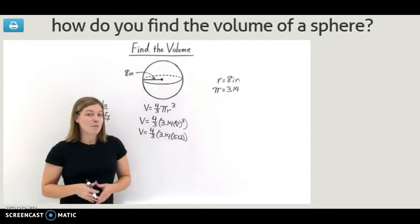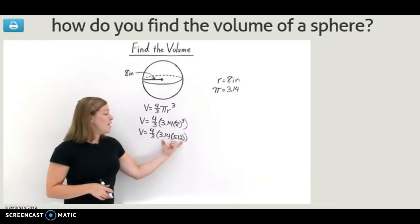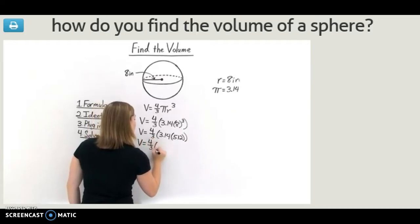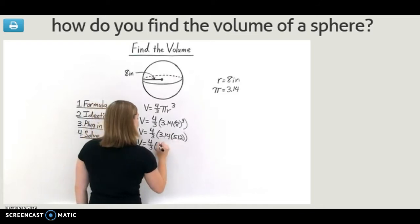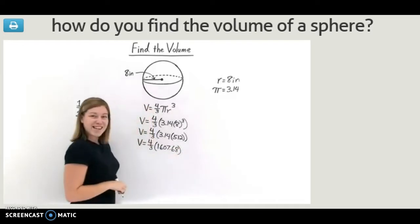Now, next in the order of operations, we need to simplify what's inside the parentheses. So we need to multiply these two numbers together. We have v, the volume, is equal to 4 thirds, and 3.14 times 512 is 1,607.68.